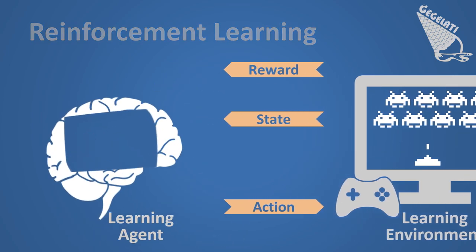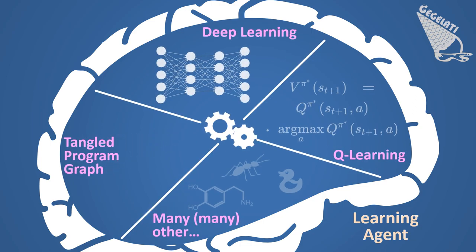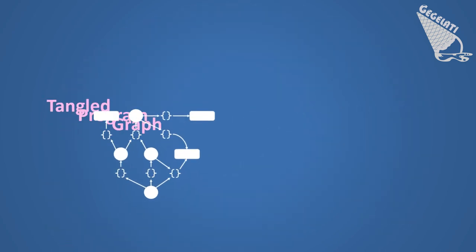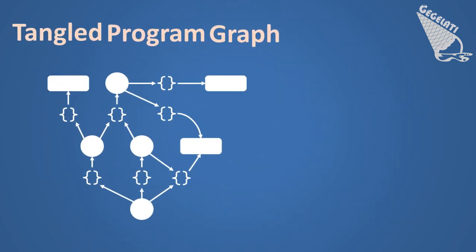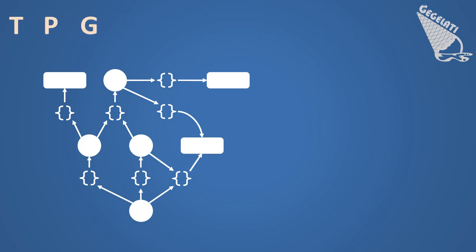Now let's focus on the brain of this learning process and the mechanisms powering it. Many different machine learning techniques are available to power the learning agent, like deep learning, Q-learning, tangled program graphs, and many others. The learning algorithm used in the GEGELATI library is called a Tangled Program Graph, or TPG for short.